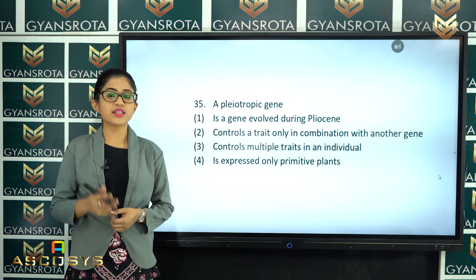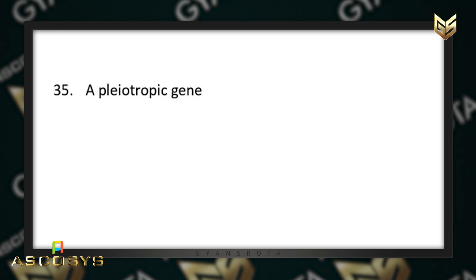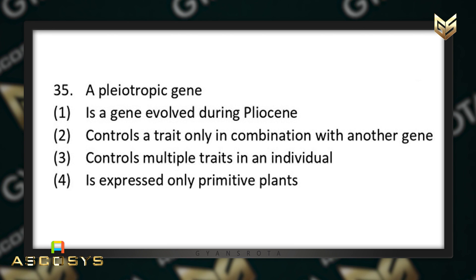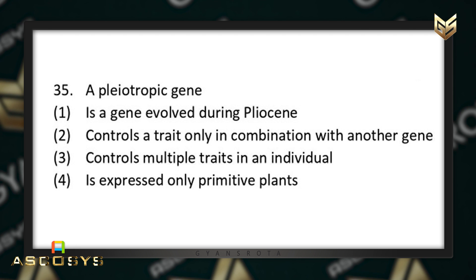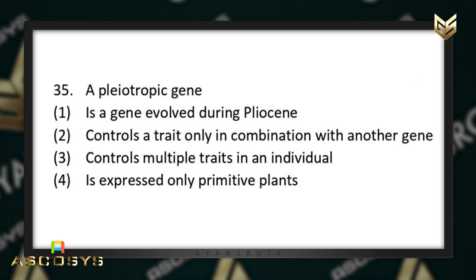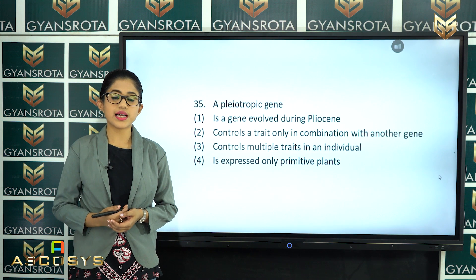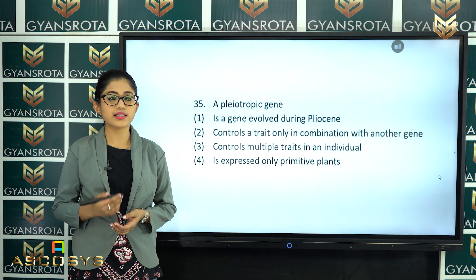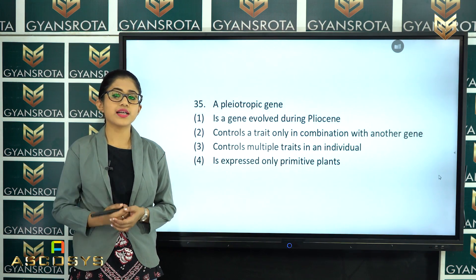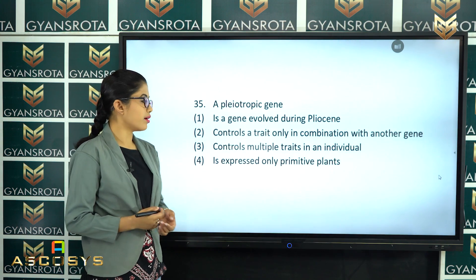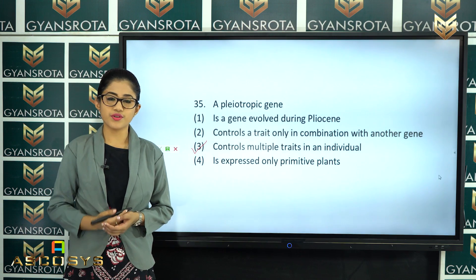The next question is question number 35. A pleiotropic gene is what? Options: it is a gene which evolved during the Pliocene; it controls a trait only in combination with another gene; it controls multiple traits in an individual; or it is expressed only in primitive plants. From the chapter Principles of Inheritance and Variations, a pleiotropic gene controls multiple traits in an individual. Option number 3 is the correct answer.